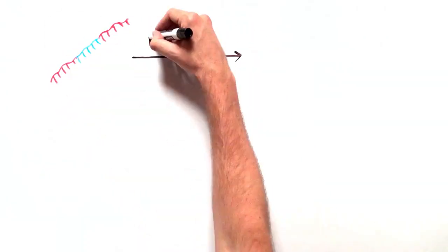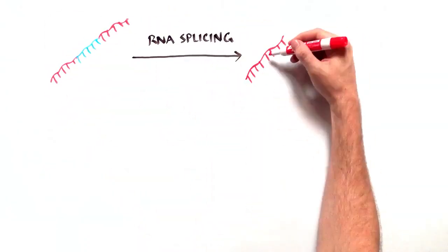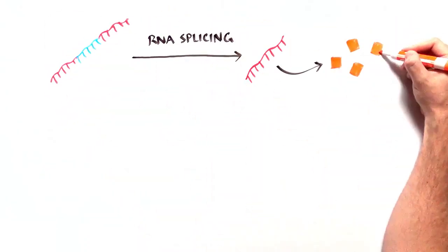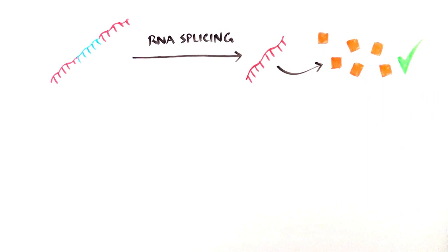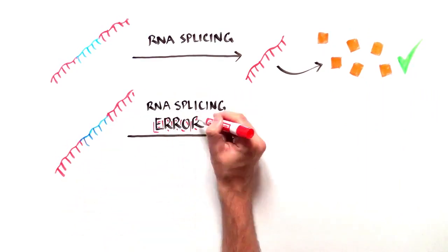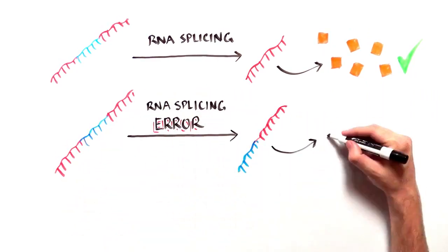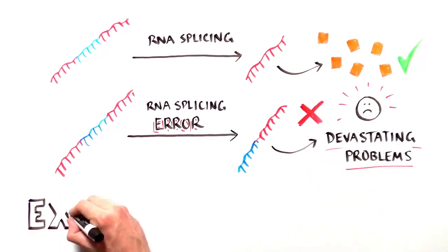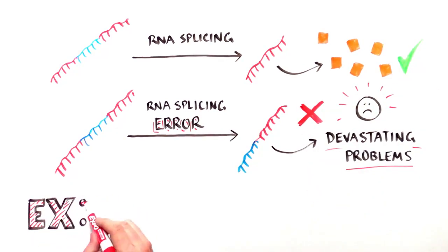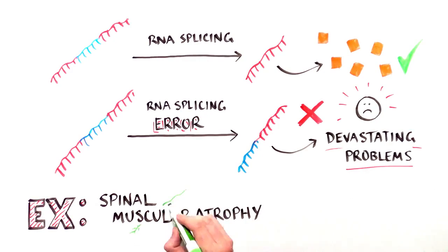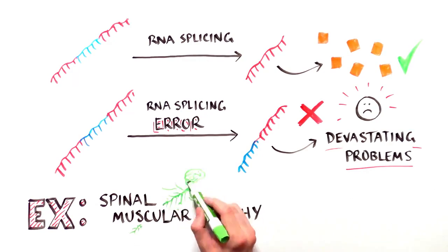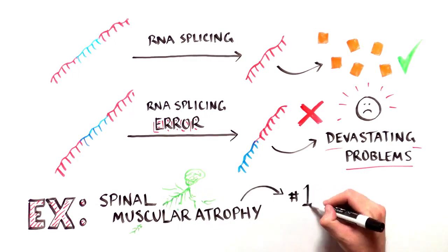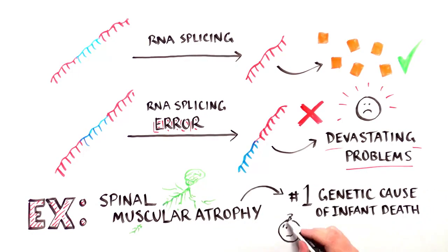While RNA editing is critical for generating the hundreds of thousands of proteins that keep us alive, splicing errors can lead to devastating health problems. One example is an often fatal disease called spinal muscular atrophy, or SMA. It's the number one genetic cause of infant death.